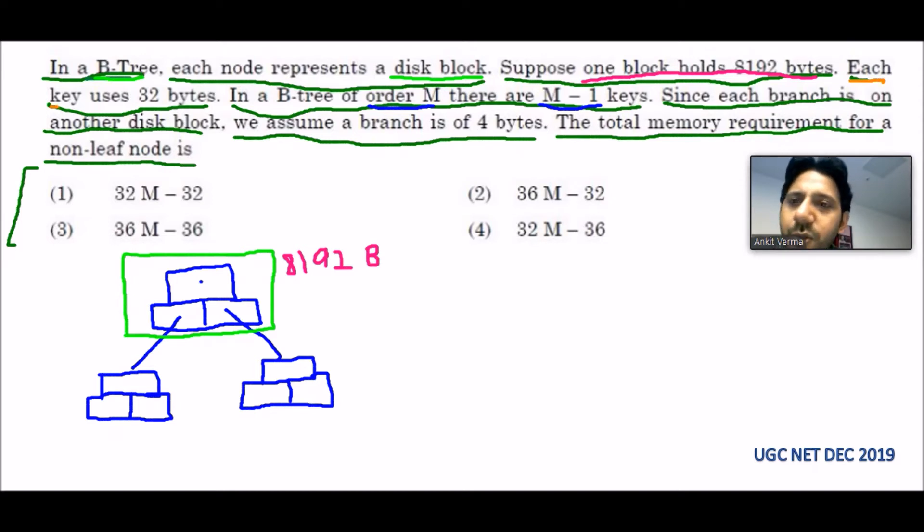Each key uses 32 bytes. We have assumed that this one is our key, so every key will take 32 bytes. This will take 32 bytes, capital B for bytes.